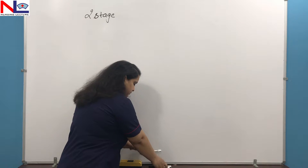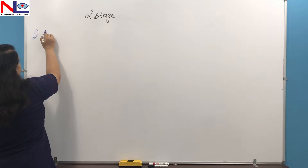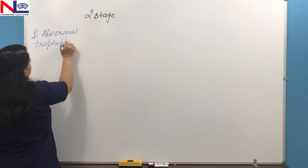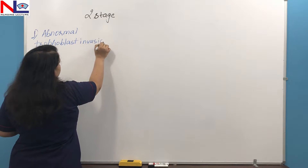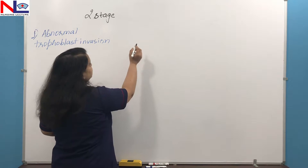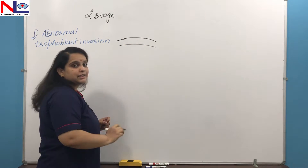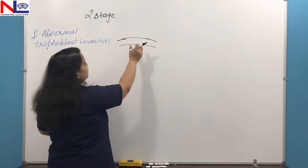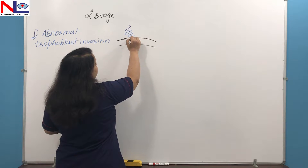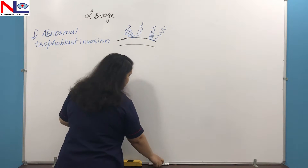The first etiopathogenic factor responsible for developing preeclampsia is abnormal trophoblast invasion. If you remember, we already talked about the development of the placenta — just revise the previous points. Here is the maternal tissue, that is the decidua basalis, which is formed from the endometrium of the uterus, and here are the finger-like projections or the functional unit of the placenta — the chorionic villi.